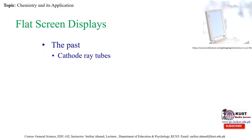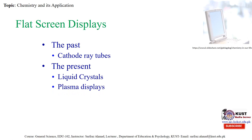In the past, a cathode ray tube was fitted in televisions and monitors that people used — that type of screen. But in the present, liquid crystals and plasma displays are there. And in the future, light emitting polymers will be there. So chemistry is involved in all these things. This is an increasingly interesting subject, and it is important to know that chemistry is used in all matters.